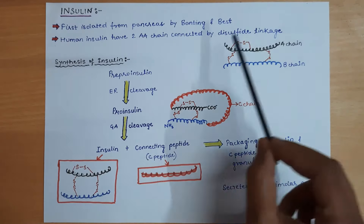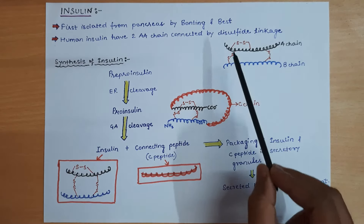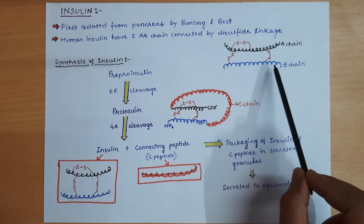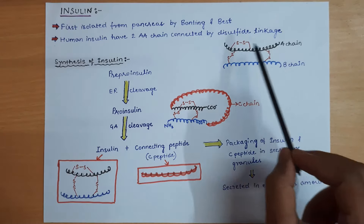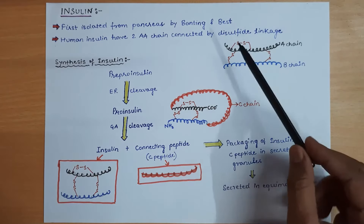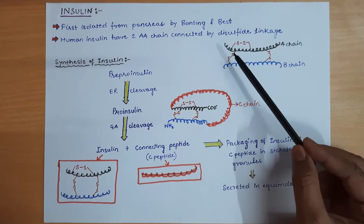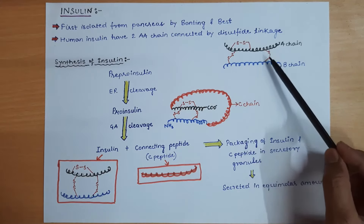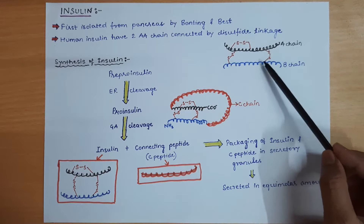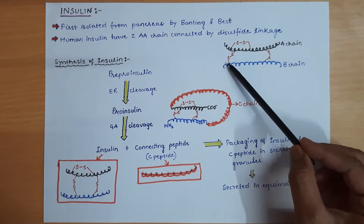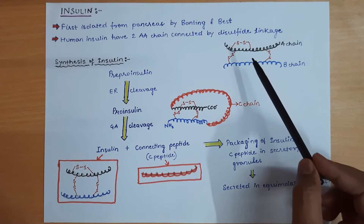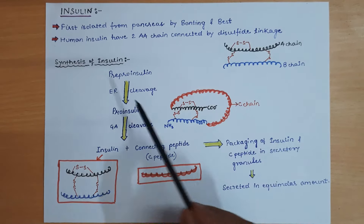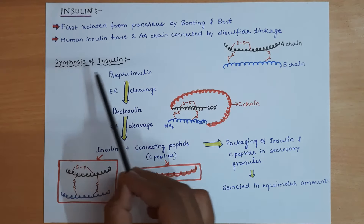Human insulin has two chains: an A chain and a B chain. These two chains are connected to each other by disulfide linkages. This is the basic structure of normal human insulin.